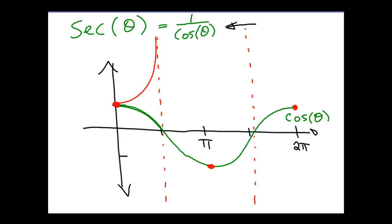Likewise, if we look at going from 3π/2 to 2π, when we're at 3π/2 we're at an asymptote. But as we move closer and closer to 2π, cosine is a very small positive number, which means secant will be a very large positive number. So we come down from that asymptote and meet the cosine graph at 2π. The same thing will happen between π/2 and 3π/2, only everything will be negative because the cosine values are negative, therefore the secant values will be negative.